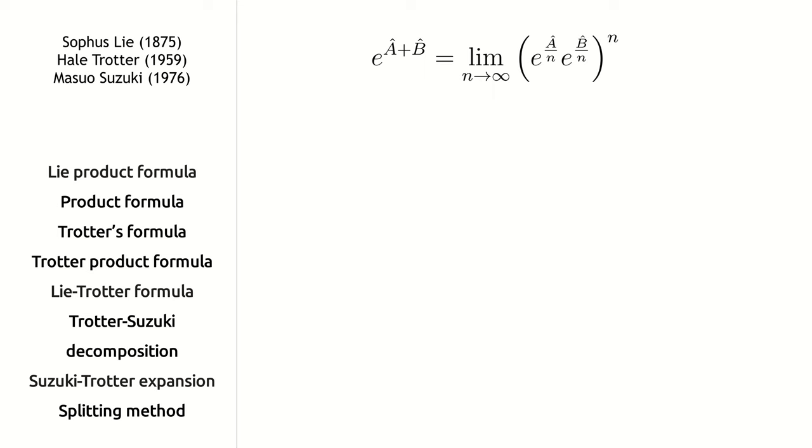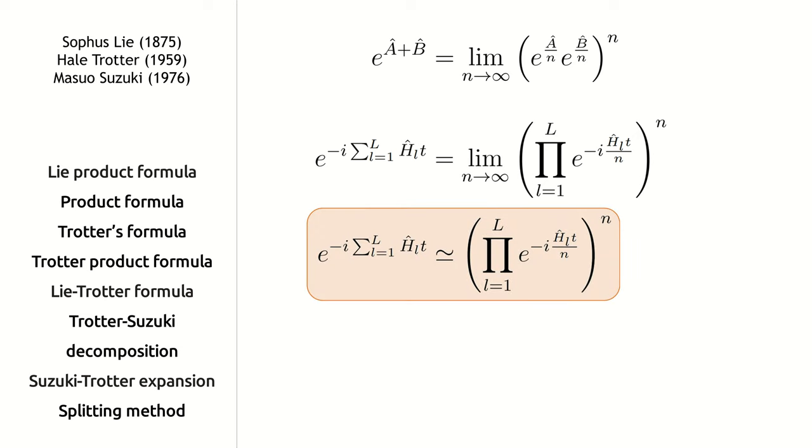We can apply this formula to the k-local Hamiltonian even when the local terms do not commute with each other. Since the limit of this formula is infinite, we have to truncate the series when implementing this formula on a quantum computer. The truncation introduces error in the simulation. It is important to notice that when the local terms of the Hamiltonian commute, the identity is exact.